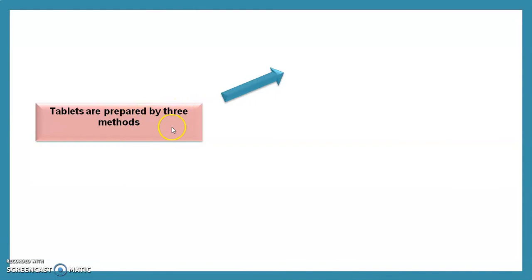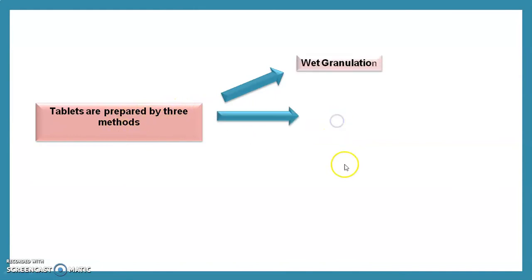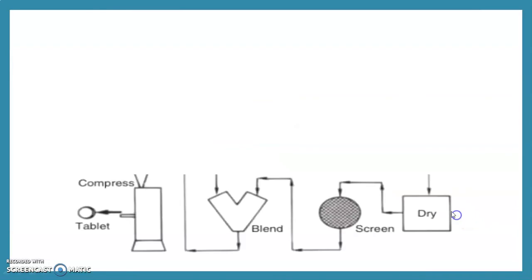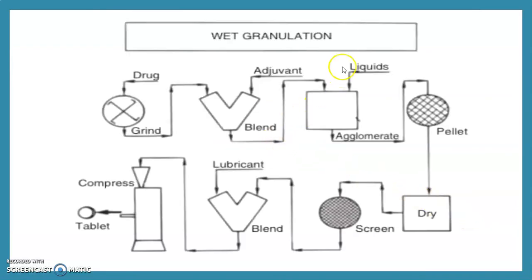Tablets are prepared by three methods: first is wet granulation, second is dry granulation, and third is direct compression. This is the wet granulation chart or layout.